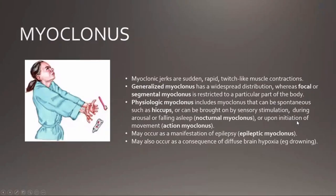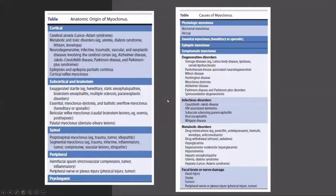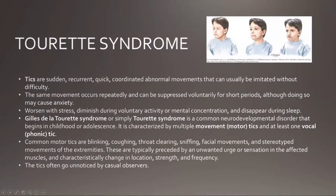Myoclonus involves rapid jerking of groups of muscles, usually the upper part of the body, so patients drop whatever they're holding. It can be epileptic — treat it as a seizure — or non-epileptic, such as after drowning when patients survive but continue to twitch. Tourette syndrome is a syndrome where the patient, usually a child, has a combination of vocal tics and motor tics. A motor tic is a sudden, recurrent, quick, but coordinated abnormal movement.